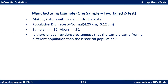Notice that 4.31 is bigger than 4.25. There's some evidence the mean is bigger than before, but is that just normal fluctuation? We wouldn't expect the sample mean to be exactly 4.25 every time. Or does it mean something's wrong with the machine — maybe it's been miscalibrated, or someone turned a knob the wrong way — and we're now producing bigger pistons? We need to decide: do we stop the machine and fix it, or is there no real problem? That's what we're trying to determine.